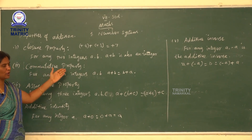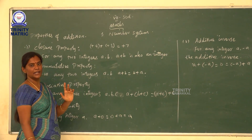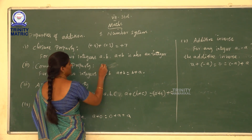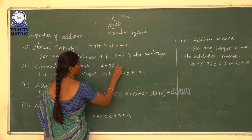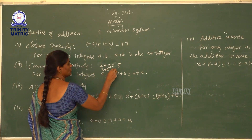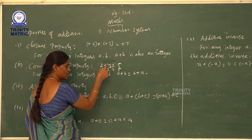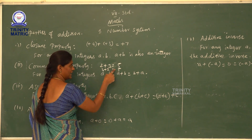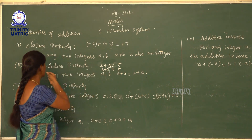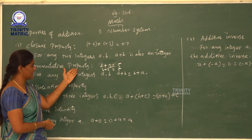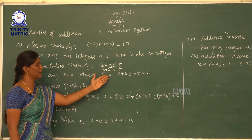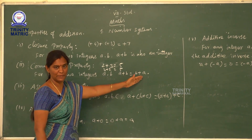Next, commutative property: we add two integers in any order and the answer will be equal. For example, 2 plus 3 is 5. If we change the order — 3 plus 2 — the answer is still 5. In general form, for any two integers a, b: a plus b is equal to b plus a.